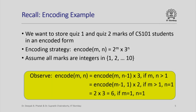Let us go back to the encoding example that we have been studying in the last few lectures. We want to sort quiz 1 and quiz 2 marks of CS101 students in an encoded form. The encoding is given by encode(m, n) = 2^m × 3^n. All marks are assumed to be integers in the range 1 through 10. We can think of this encode function specified recursively: to compute encode(m, n), if both m and n are greater than 1, compute encode(m, n-1) and multiply by 3; if n equals 1, compute encode(m-1, 1) and multiply by 2 if m is greater than 1; and if both m and n equal 1, the result is directly 2 × 3 = 6.